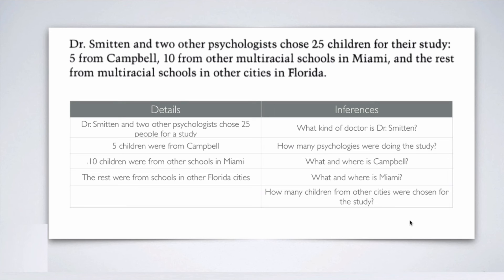How many children from other cities were chosen for the study? We can see there are 25 children total, 5 from Campbell, and 10 from Miami. We don't know how many came from other cities in Florida, but we can calculate: 5 plus 10 is 15, and 25 minus 15 is 10. There's nothing written about how many children were from other cities in Florida, but of course we can count it — 10 children came from other cities in Florida. This is our conclusion, so again, this is an inference.